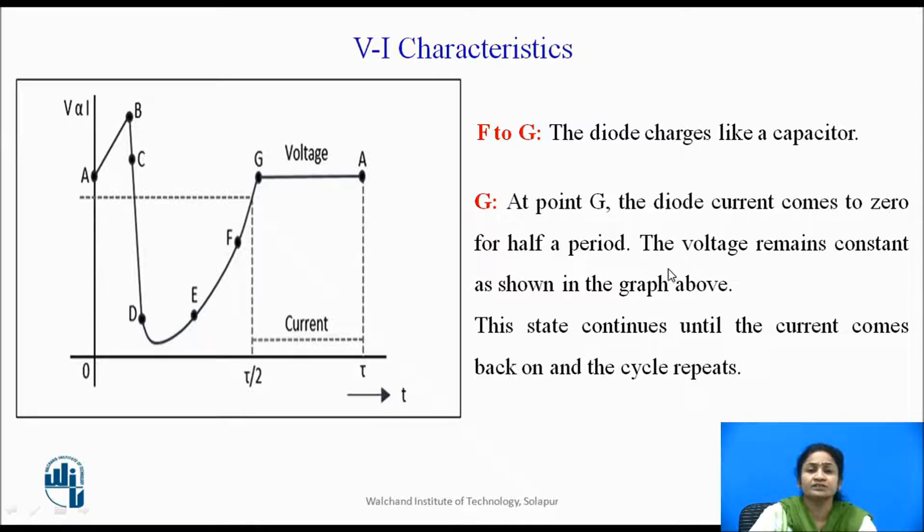At that time duration, the time of that pulse is half of the total pulse. The voltage remains constant after point G. So it is represented from G to A, again the voltage is maximum but current is minimum. From A again the cycle starts repeating.